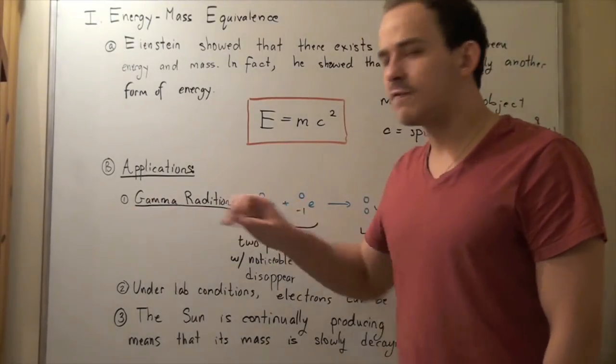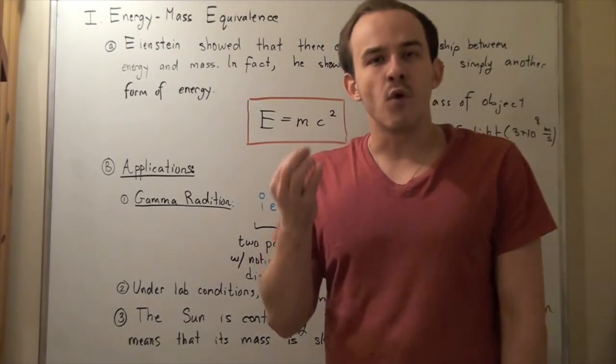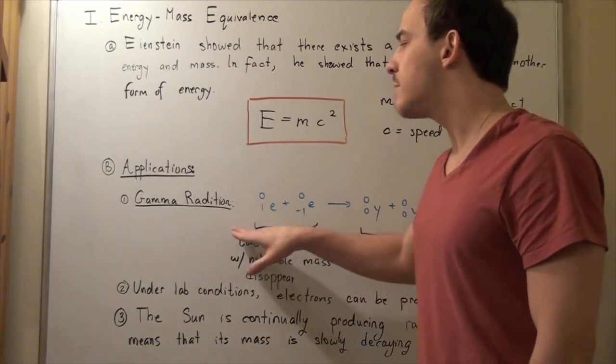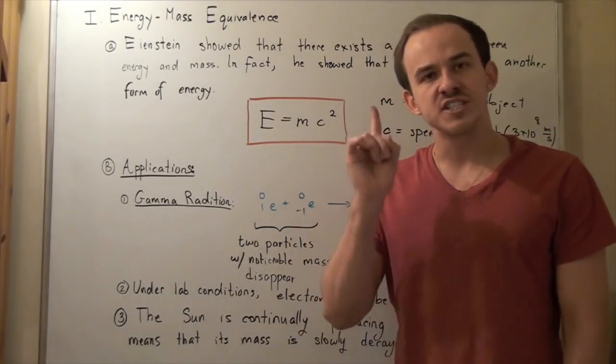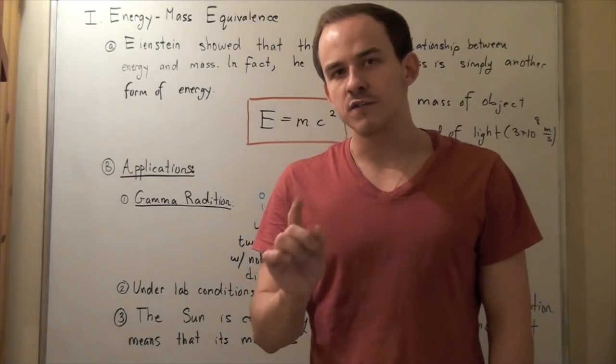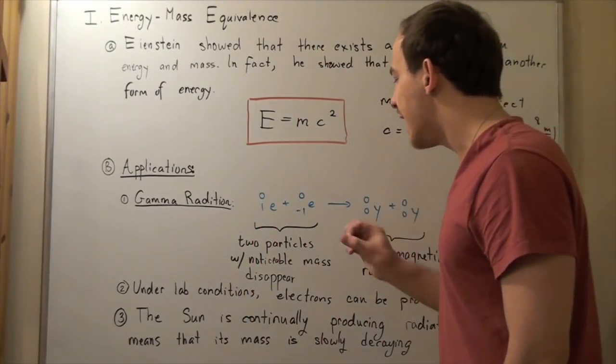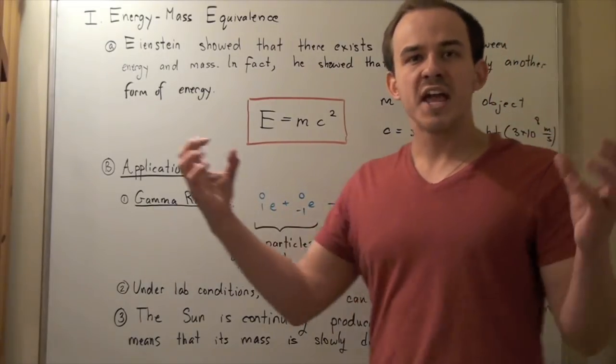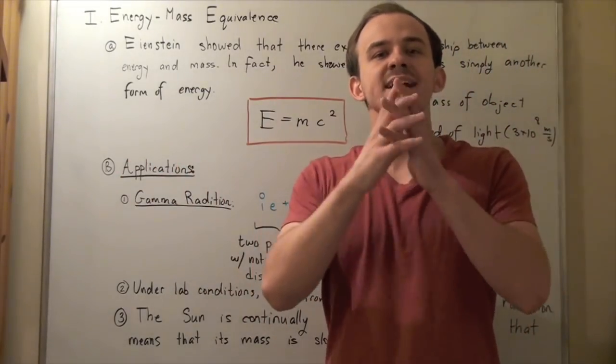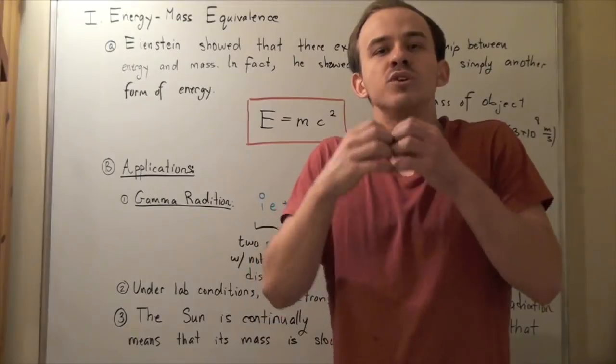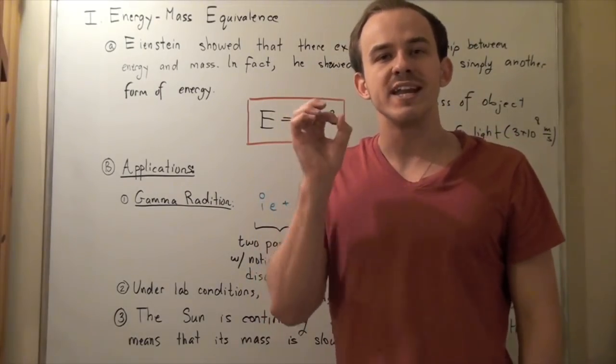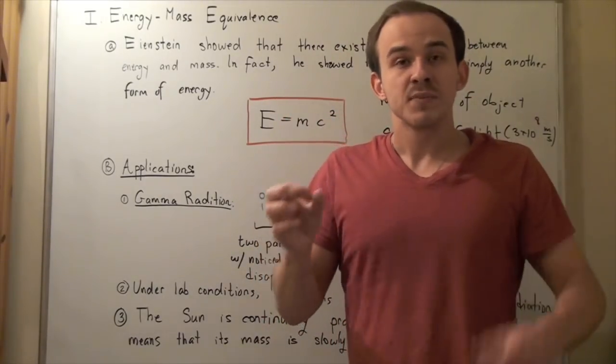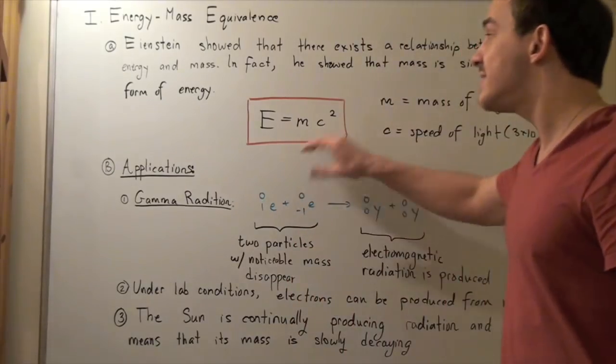Let's look at the first application. There is a form of radioactive decay known as gamma radiation, in which scientists were able to observe that if you combine an electron and a positron, their masses will combine and disappear, and they will release electromagnetic radiation, or light.